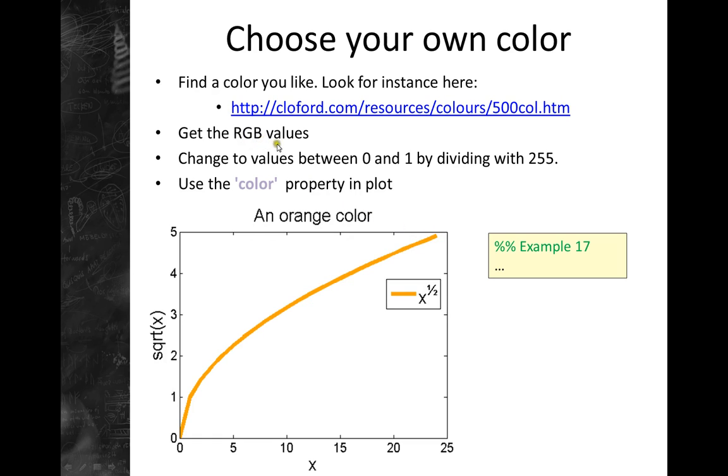For example, if you follow this link, it will list 500 different colors. Or you can go to another source and find a color you like. You need to change it from a value between 256 value to a value between 0 and 1. And then we can just use the color property in plot.